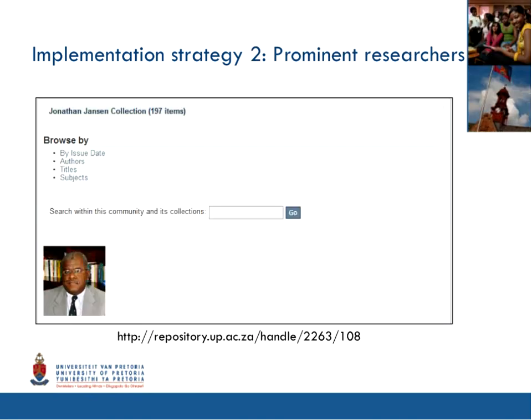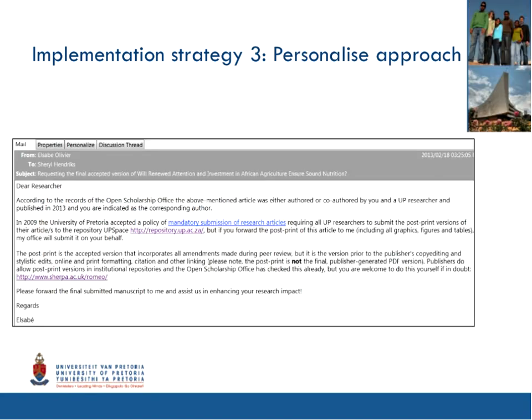The second strategy was to target prominent researchers. This is a photograph of Professor Jonathan Janssen, the former dean of the education faculty — now the principal of the University of the Free State. We started a personalized collection for him in the UPSpace repository. He's a very charismatic leader, and this was a very popular collection. It made other researchers think about having something similar, and more and more researchers decided to archive their papers in the repository after seeing a demonstration of this particular collection.